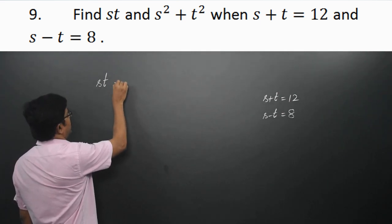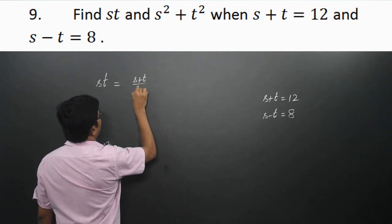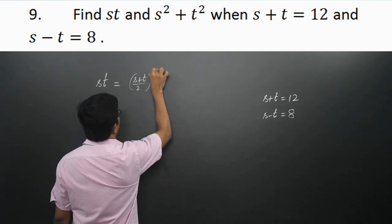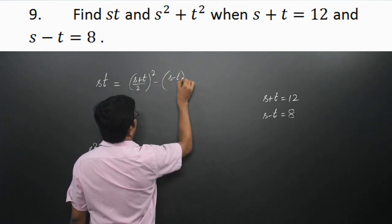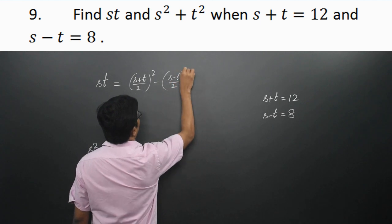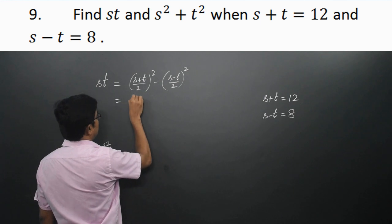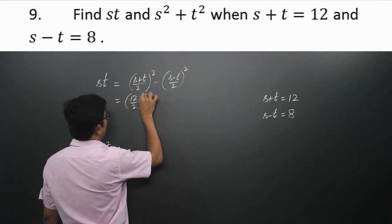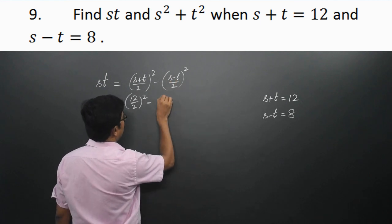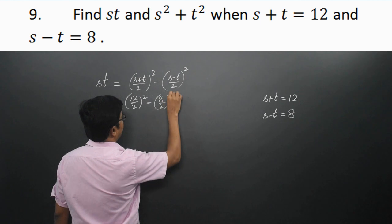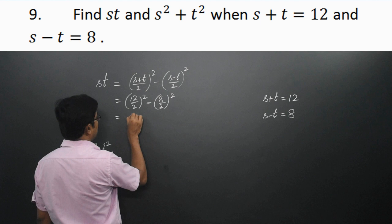st can be written as [(s + t)/2]² − [(s − t)/2]². The value of s + t is 12, so it is (12/2)² − (8/2)², that is 6² − 4².